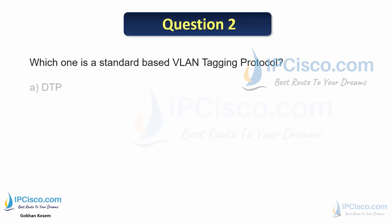Question 2: Which one is a standard-based VLAN tagging protocol — DTP, LLDP, ISL, 802.1Q, or VTP? The answer is D, 802.1Q.